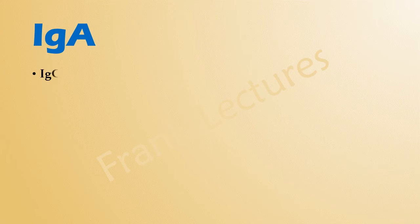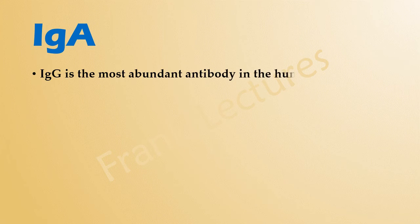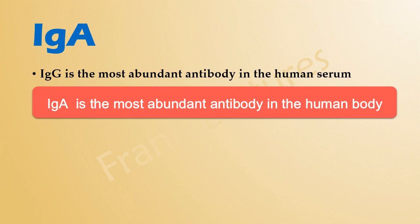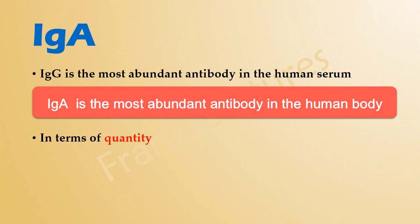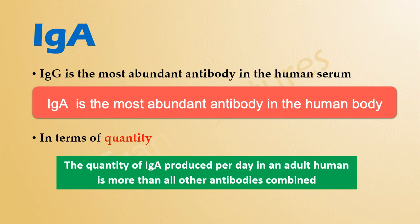If you remember the previous lecture, we said that immunoglobulin G is the most abundant antibody in the serum. But the most abundant antibody in the human body overall is IgA. If all the production of IgA at mucosal surfaces is taken into account, it is the most abundant immunoglobulin in the human body in terms of quantity. This is obvious since humans have about 400 square meters of mucosal surface, which includes the respiratory, digestive, and reproductive tracts. The quantity of IgA produced per day in an adult human is more than all other antibodies combined.